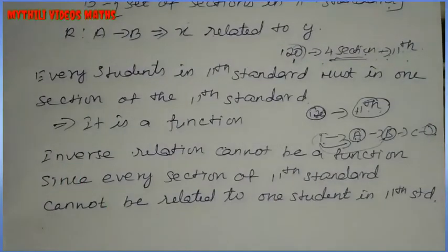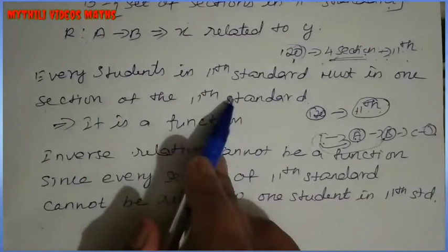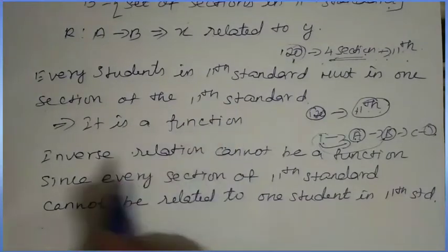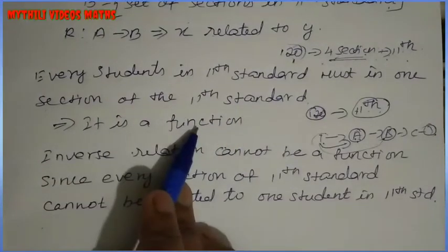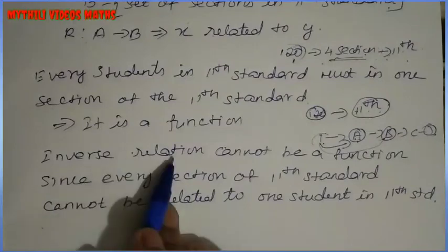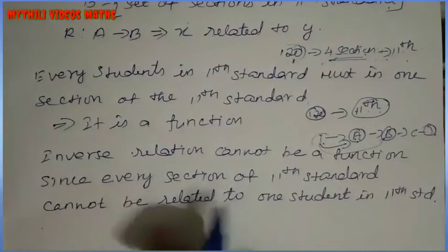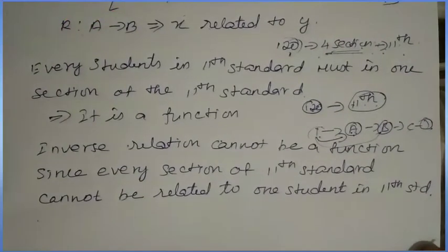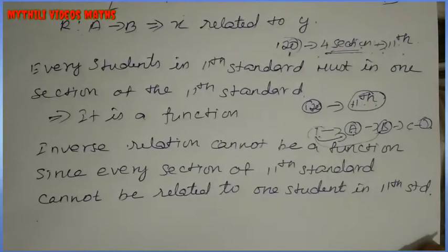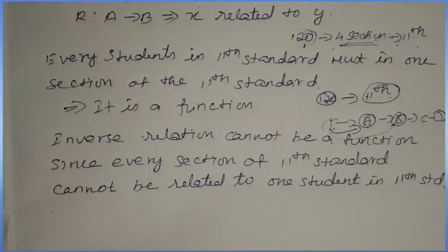The relation is a function. For the inverse relation, we have a many-to-one mapping — is that clear? If you have doubts, comment in the comment box. Please subscribe, like, and share this video. Thank you.